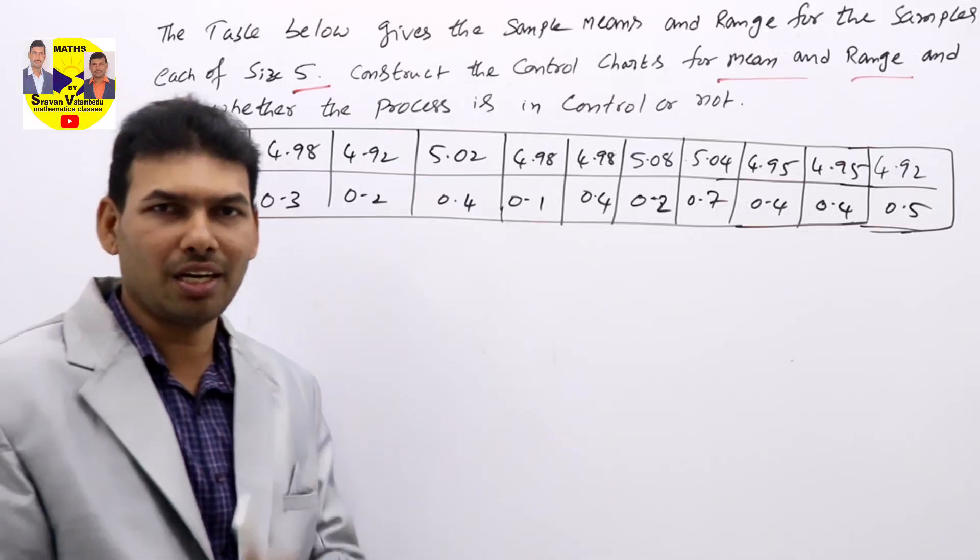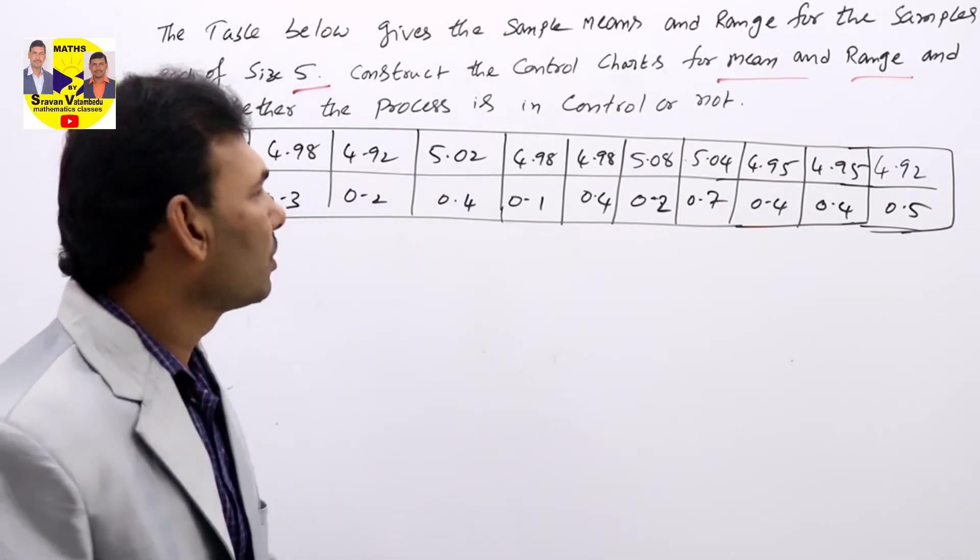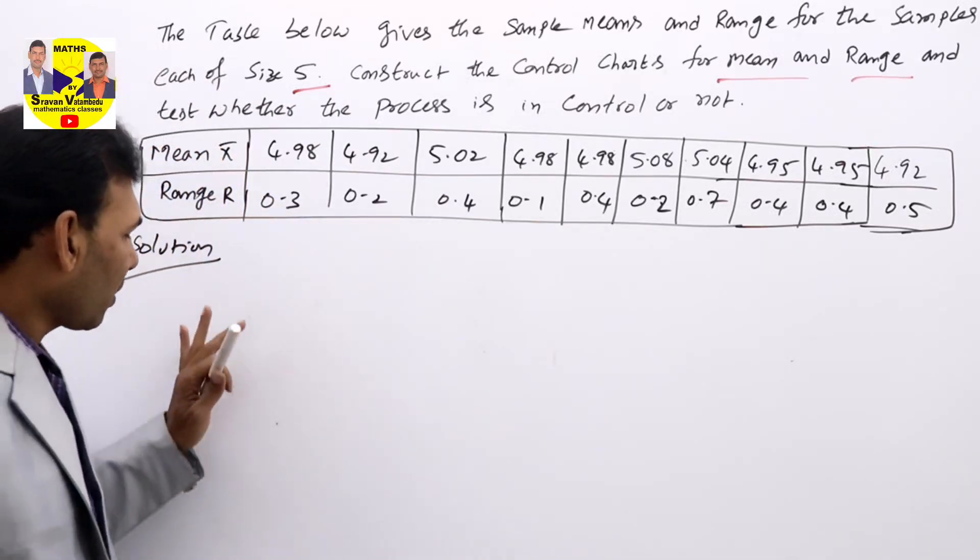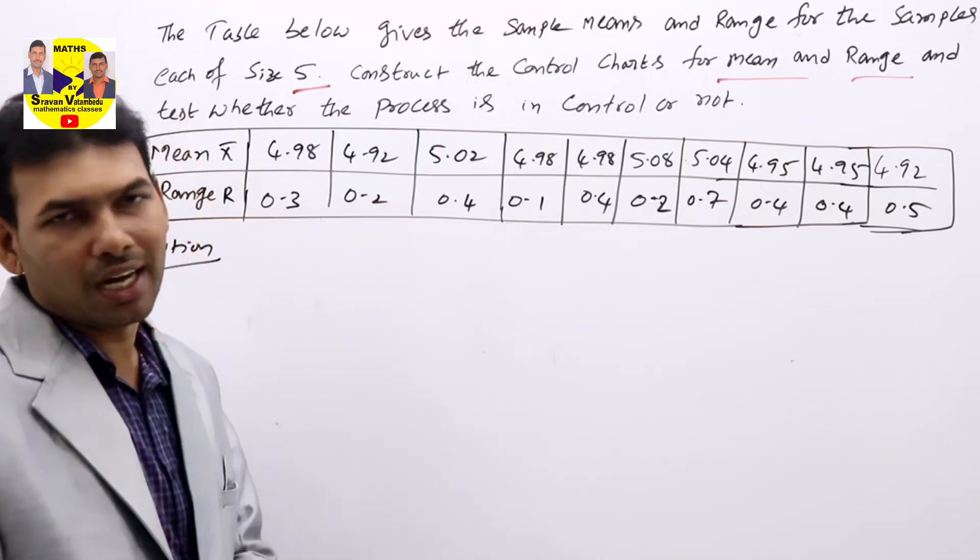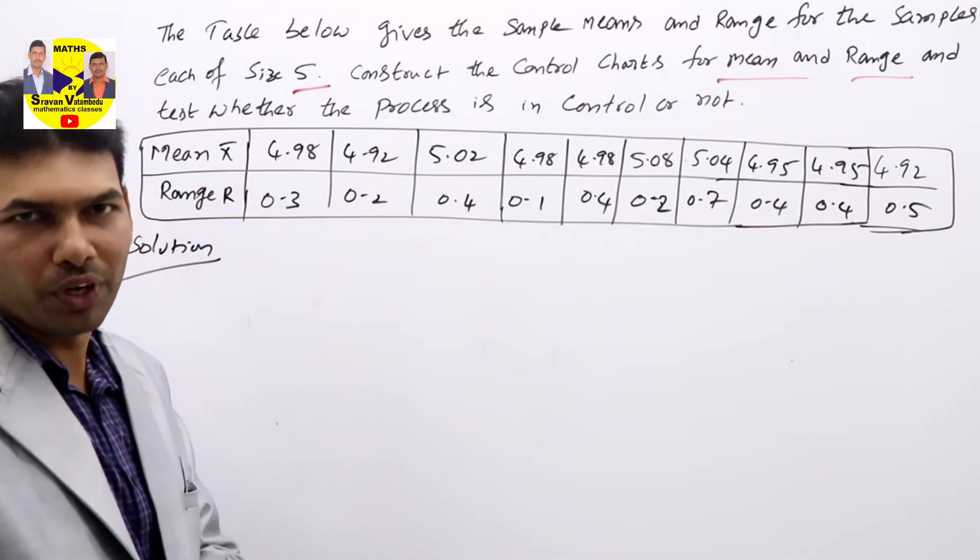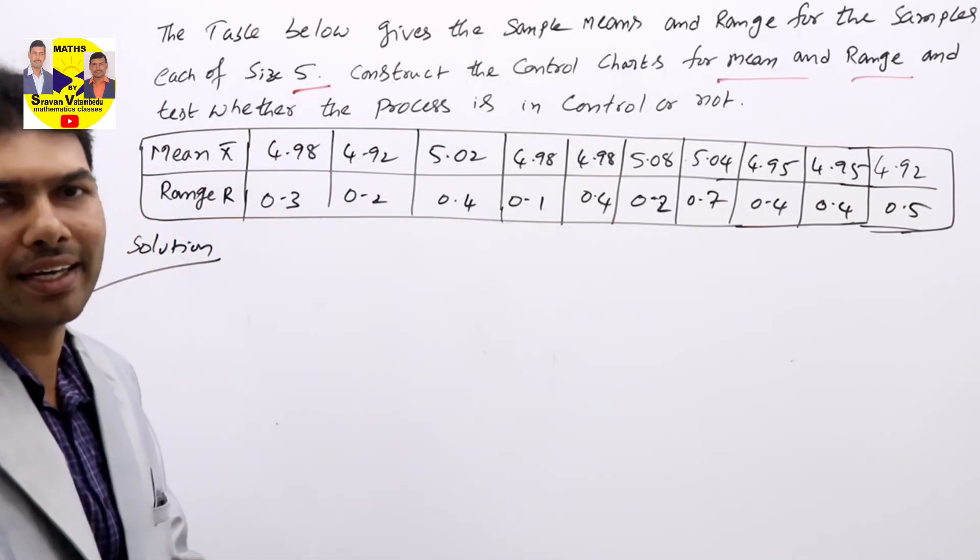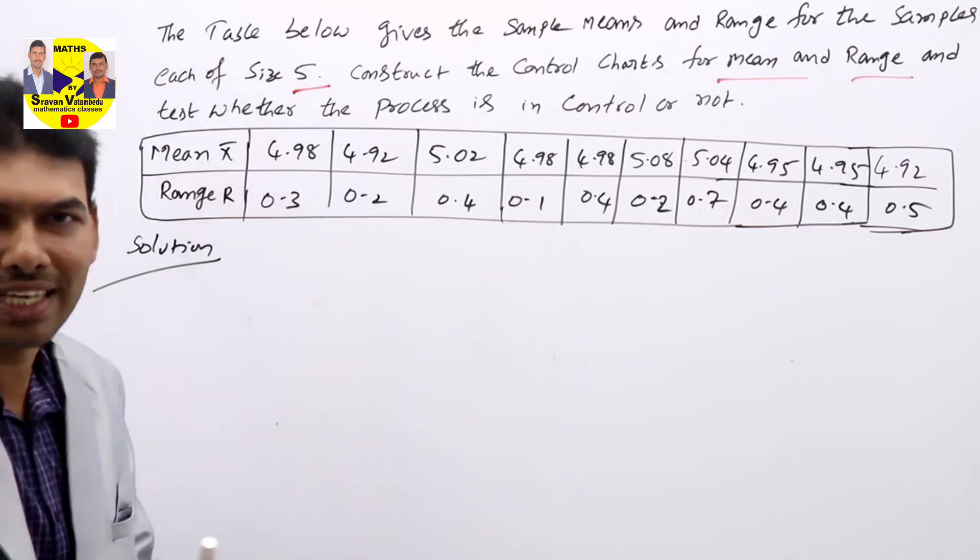For any chart, you need to calculate control lines: CL, UCL, and LCL. For that, what is the required information given in the table itself? We need to calculate the UCL values and LCL values.